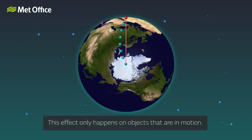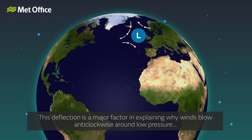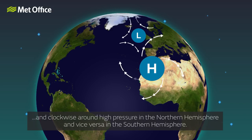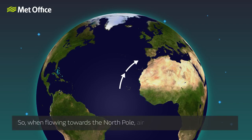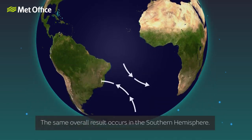This effect only happens on objects that are in motion. This deflection is a major factor in explaining why winds blow anti-clockwise around low pressure and clockwise around high pressure in the northern hemisphere, and vice versa in the southern hemisphere. So when flowing towards the North Pole, air is deflected towards the east, and when travelling southwards back towards the equator, it is deflected westwards. The same overall result occurs in the southern hemisphere.